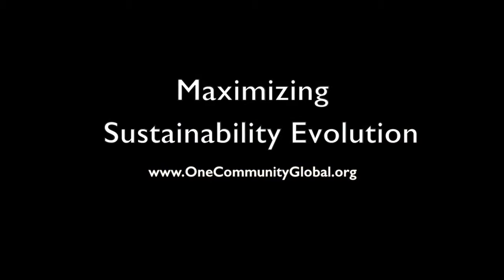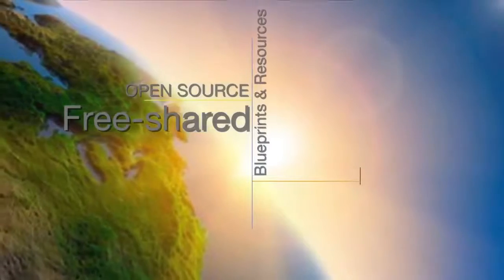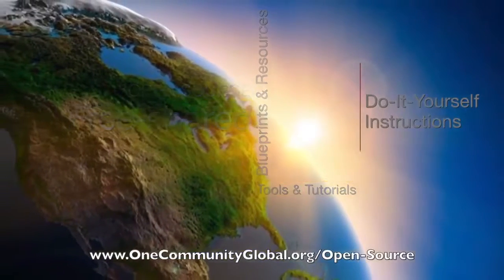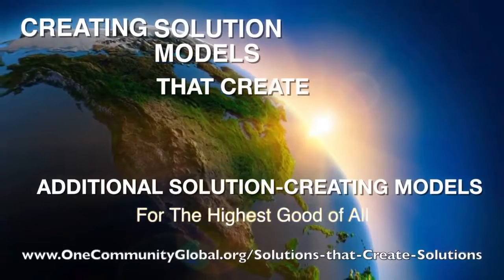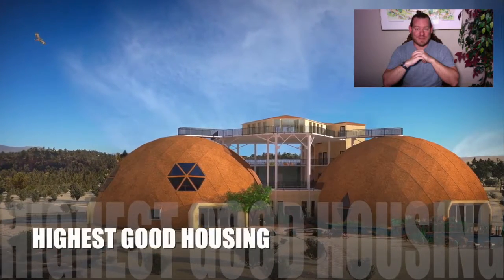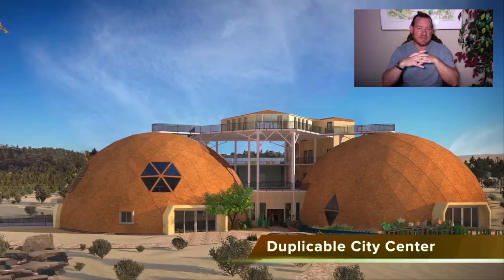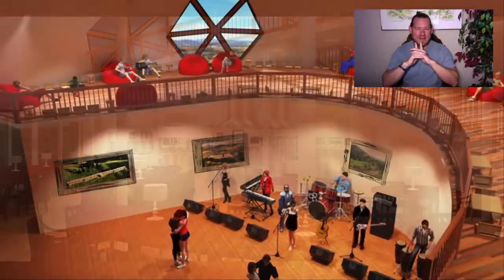Maximizing Sustainability Evolution — One Community Weekly Progress Update Number 219. One Community is a 501c3 non-profit organization creating open source and free shared blueprints, resources, tools, tutorials, and do-it-yourself instructions for highest good living — creating solution models that create additional solution-creating models in the service of all life on this planet. My name is Jay Sabel, Executive Director. This is our Weekly Progress Update Number 219, June 4th, 2017. Today's topic is maximizing sustainability evolution.